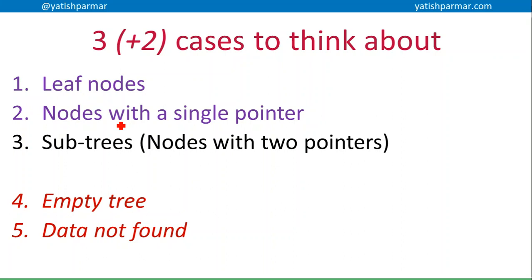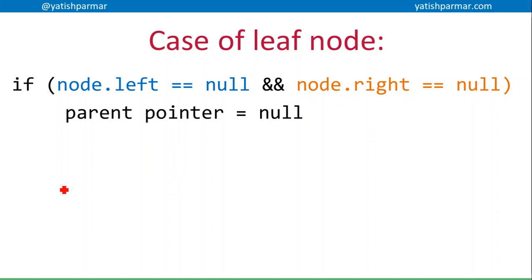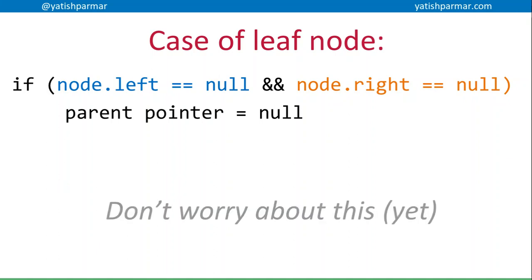There are a few different cases. First, we're going to talk about leaf nodes — they're easy to get rid of. If I have a leaf node I want to get rid of, like Balrog over here, what I need to do is keep track of the left pointer from the parent because I want to change that pointer to now be null. I know I've hit a leaf node because node.left is null and node.right is null, so the parent pointer can also be null because there's nothing else underneath it.